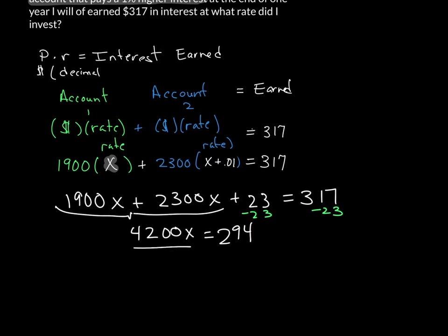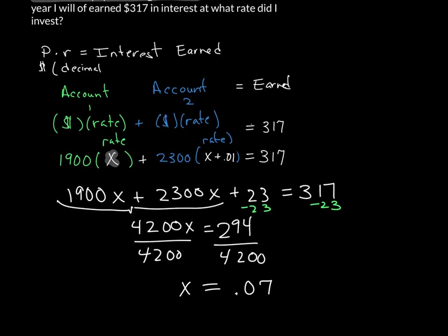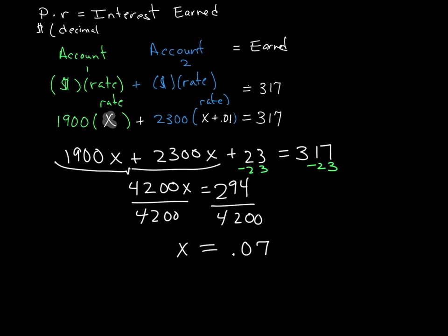Divide both sides by 4,200, and I'm left with X is equal to 0.07. So that means my rate for account one, which was the first one that had the $1,900 in it, is 7%.